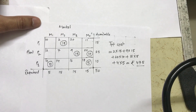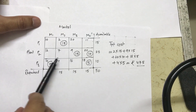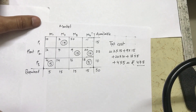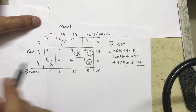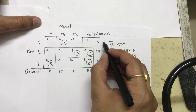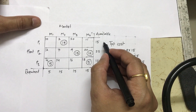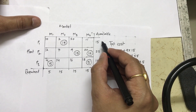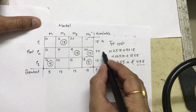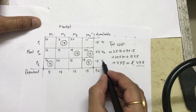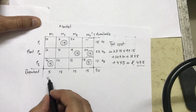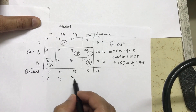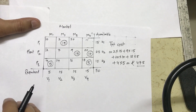Now I'll discuss what exactly degeneracy is. I have already told you this is a degenerate transportation problem because the number of allocations is less than m plus n minus 1 — that is, row plus column minus 1. If the problem is degenerate and I start applying the optimality test, a problem arises. To calculate the optimality test, I first calculate u values — u1, u2, u3 — and then v values — v1, v2, v3, and v4.